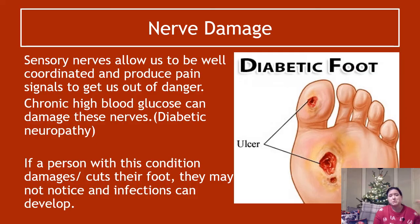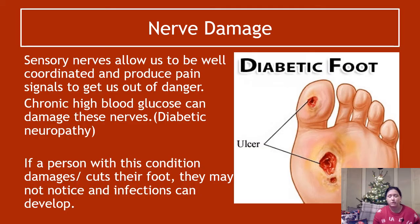Let's look at the nerve damage one first. Sensory nerves allow you to be well coordinated and produce pain signals to get you out of danger — the reason you don't fall over all the time is you've got sensory information coming from your feet telling you how well balanced you are. Chronic high blood glucose can damage these nerves — that's known as diabetic neuropathy, though you don't need to know that term.